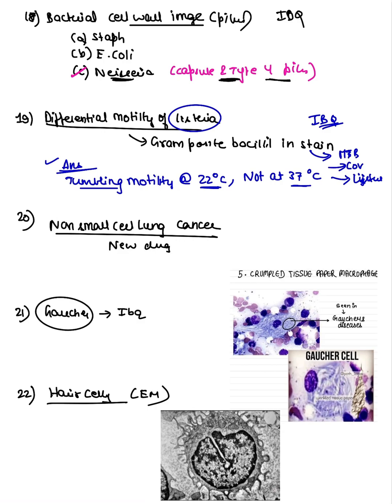They asked about Gaucher's disease — the crumpled paper appearance seen very frequently. Then an electron microscopy question on hairy cell leukemia was asked, which usually involves TRAP-positive, tartrate-resistant staining — this time a slightly different angle but same topic.